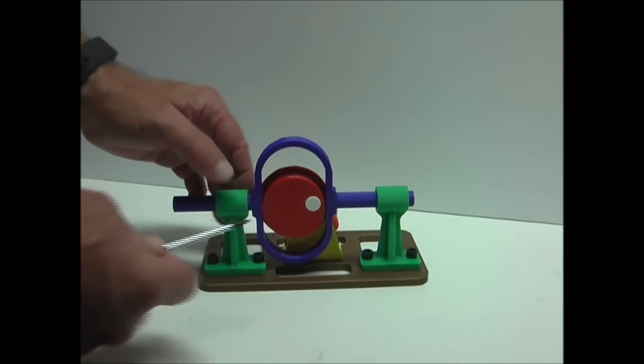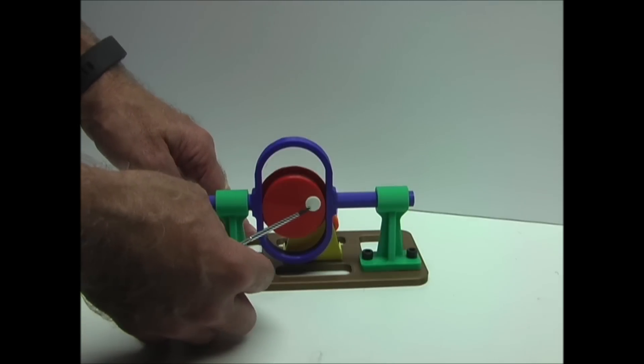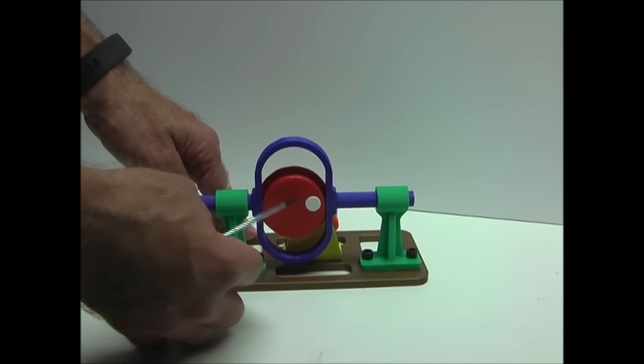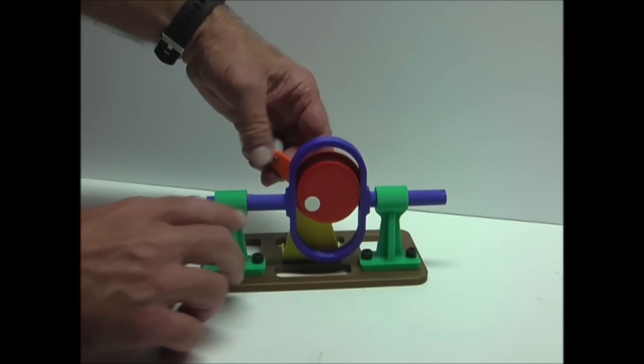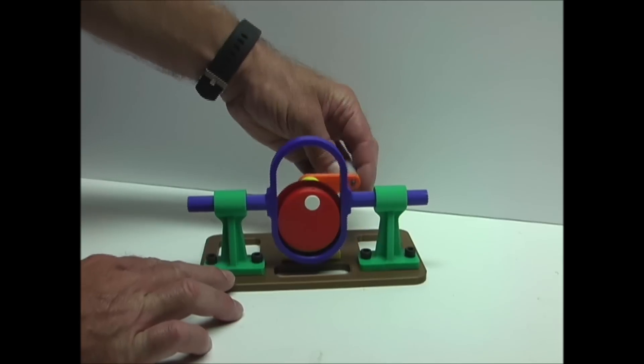This next one also has a wheel that rotates. However, this one is mounted so the pivot point is offset or eccentric from the center, and the wheel itself moves through the slider, moving the slider and arms back and forth.